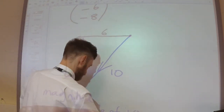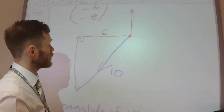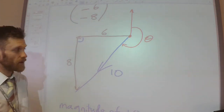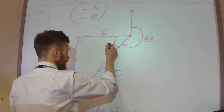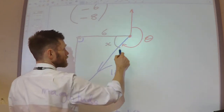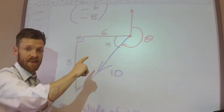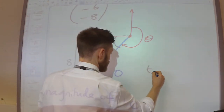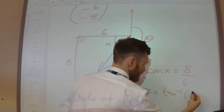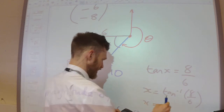In terms of the bearing, remember I started here — draw my north line — and the angle is measured clockwise from north, so I'd like to know what is that angle all the way around there. If I work out this angle x, I know all the way around to here is 270. So if I work out this angle, I could do 270 take away x, and that will leave me with the bearing I want. Tan x equals the opposite divided by the adjacent, so x equals tan inverse of 8 divided by 6, which is 53 degrees.